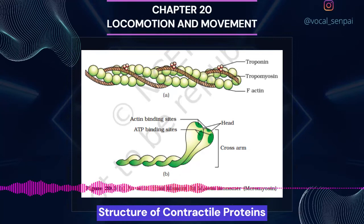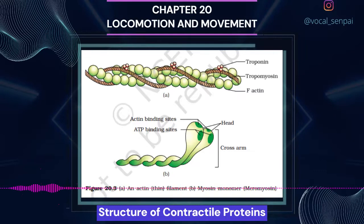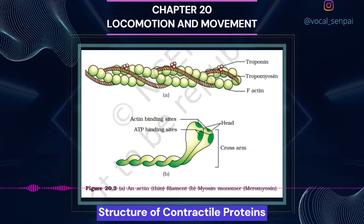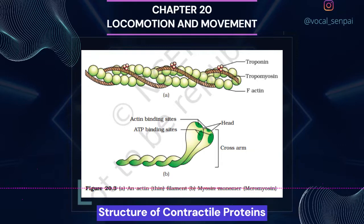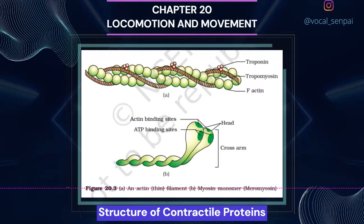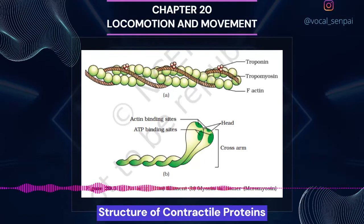Each myosin (thick) filament is also a polymerized protein. Many monomeric proteins called meromyosins constitute one thick filament. Each meromyosin has two important parts: a globular head with a short arm, called heavy meromyosin (HMM), and a tail, called light meromyosin (LMM). The HMM component — the head and short arm — projects outwards at regular distances and angles from the surface of the polymerized myosin filament and is known as the cross arm. The globular head is an active ATPase enzyme and has binding sites for ATP and active sites for actin.